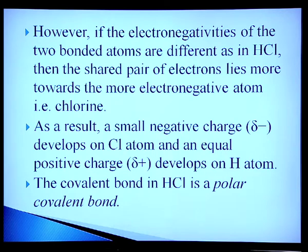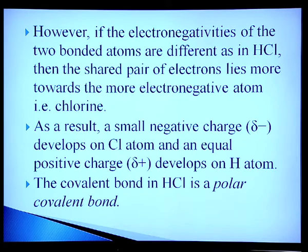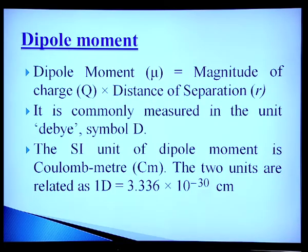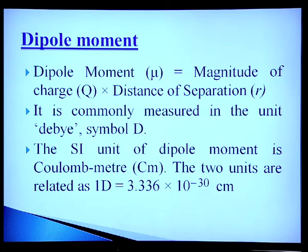To summarize polar and non-polar covalent bonds: if molecules are homonuclear — such as H₂, Cl₂ — the bond will be non-polar. But if we take HCl, HF, etc., then the bonding will be polar. Dipole moment is the magnitude of charge multiplied by distance of separation. It is commonly measured in the unit Debye (D). The SI unit of dipole moment is coulomb-meter; the two units are related by 1 D = 3.36 × 10⁻³⁰ C·m.